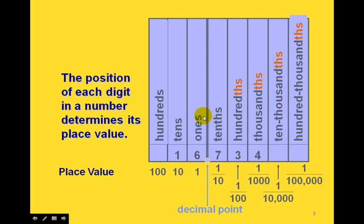The positions of the different numbers in a decimal have different names — we have different place values, just like we did for whole numbers. Looking at the numbers to the right of the decimal point, starting at the first place, we have the tenths place, then the hundredths place, the thousandths place, the ten-thousandths place, and the hundred-thousandths place, and they keep going to the right.